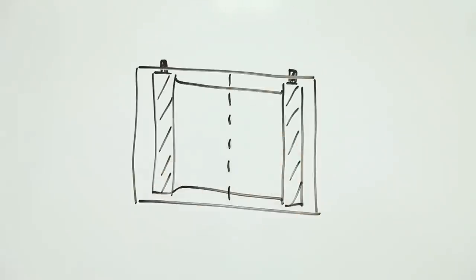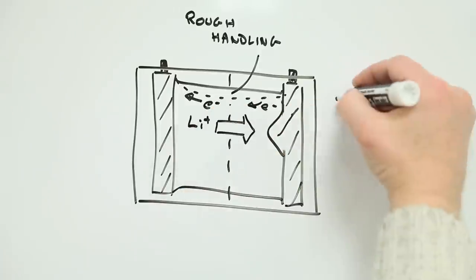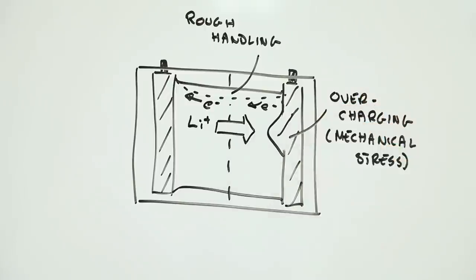Internal short circuits can be caused by manhandling, but they can also come about in other ways. As the negative electrode becomes stuffed with lithium atoms, it expands. Too much lithium and this expansion can mechanically stress the battery and compromise the internal insulation.